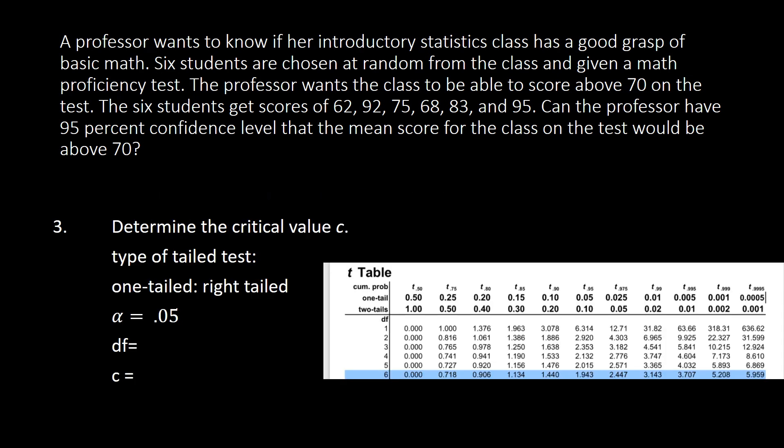Determining the critical value c. We have here the type of tailed test, because that was greater than on the alternative hypothesis. We have that one as one tailed test, and that is right tailed test. We also have the information for the alpha. Since this is 95% confidence level,